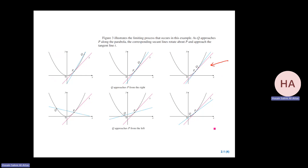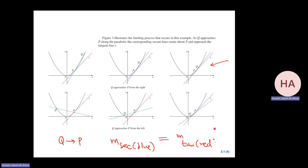So if we let Q go to P, then the slope of the secant line — the blue one — equals the slope of the tangent, which is the red one, which is what we are looking for. That's mainly the idea.